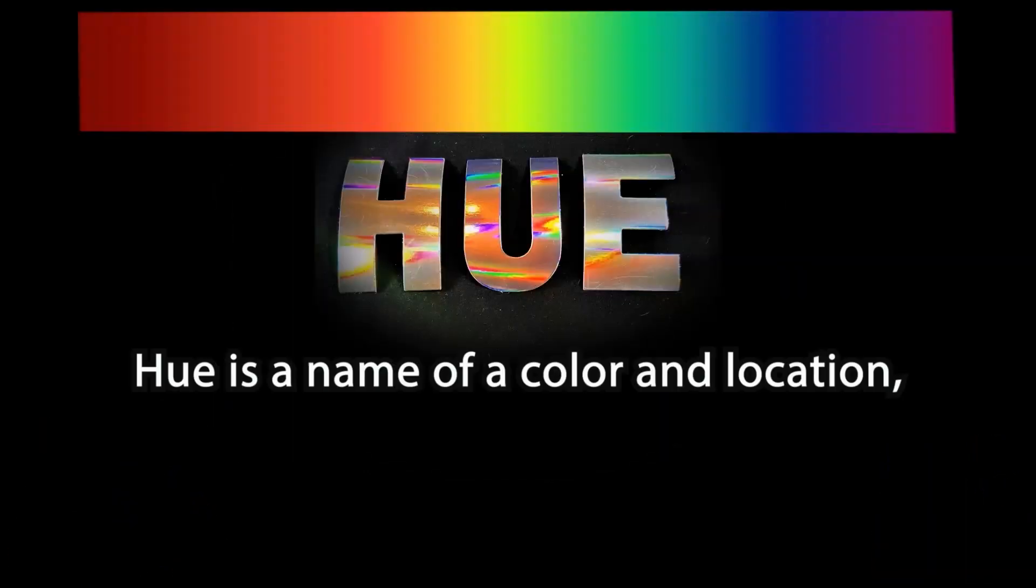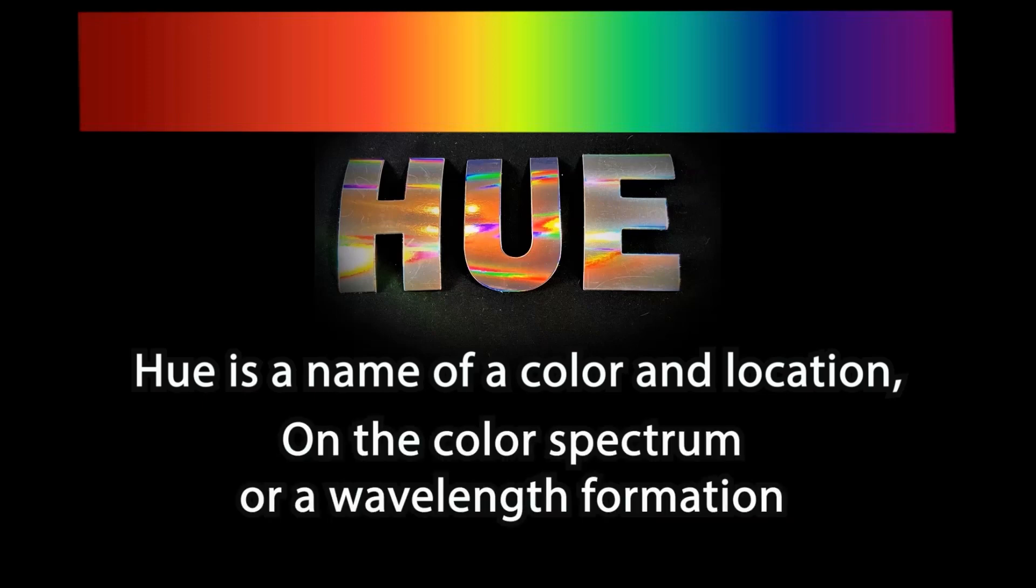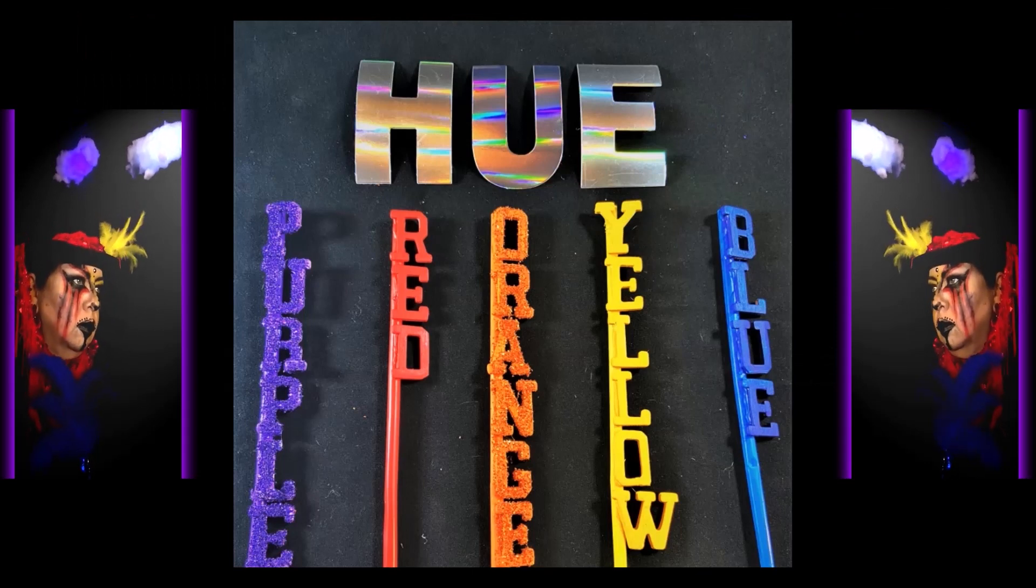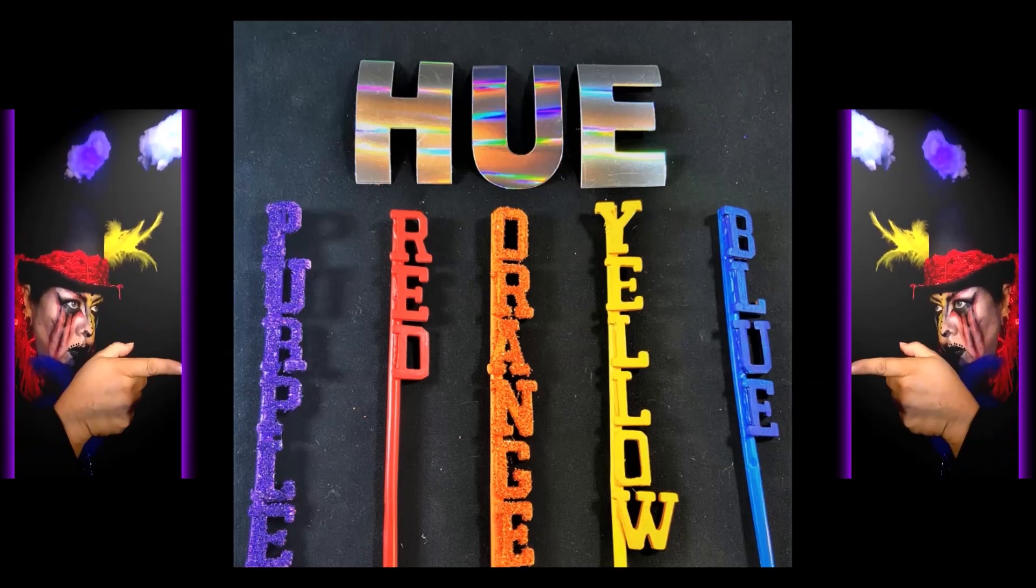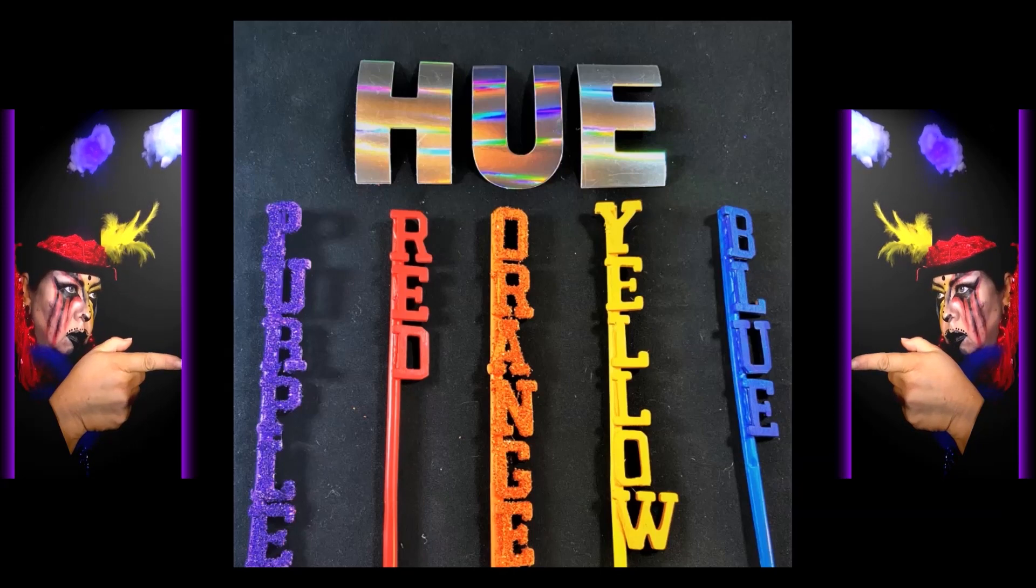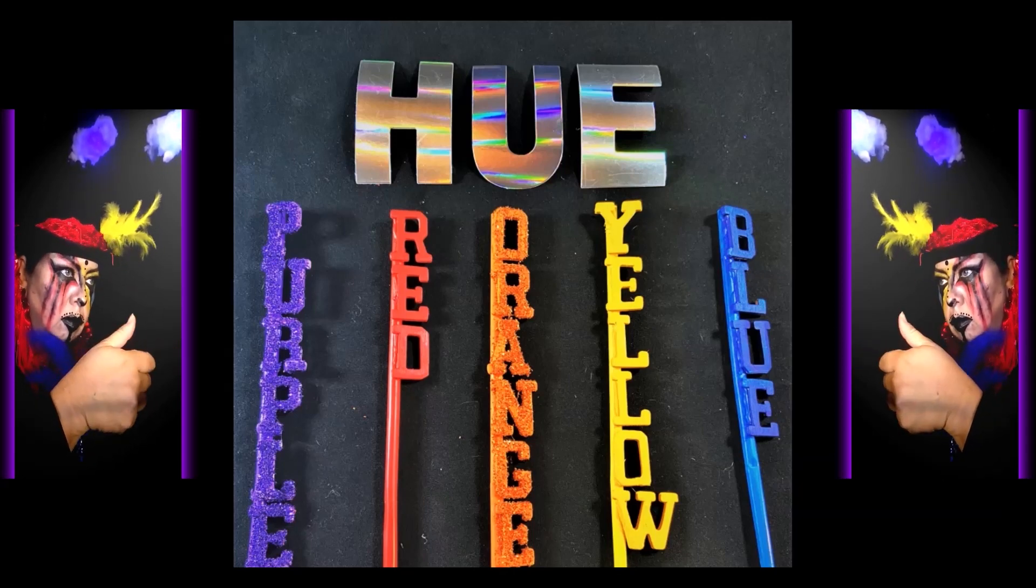Hue is the name of a color and location saturation on the color spectrum or a wavelength formation. Purple, red, orange, yellow, or blue are examples to say when naming a hue.